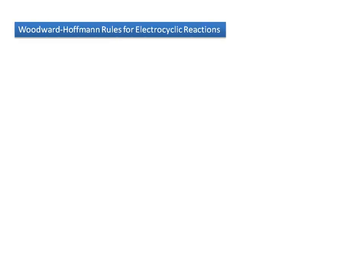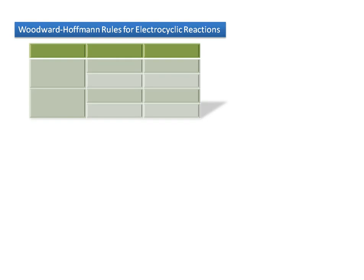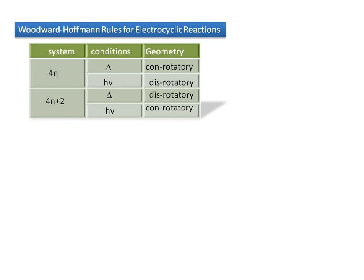Now we see the Woodward-Hoffmann rules for electrocyclic reactions. For a 4N system: thermally allowed — conrotatory; photochemically allowed — disrotatory. For a 4N+2 system: thermally allowed — disrotatory; photochemically allowed — conrotatory. In the 1,3,5-hexatriene system, which is a 4N+2 system, we follow these conditions.